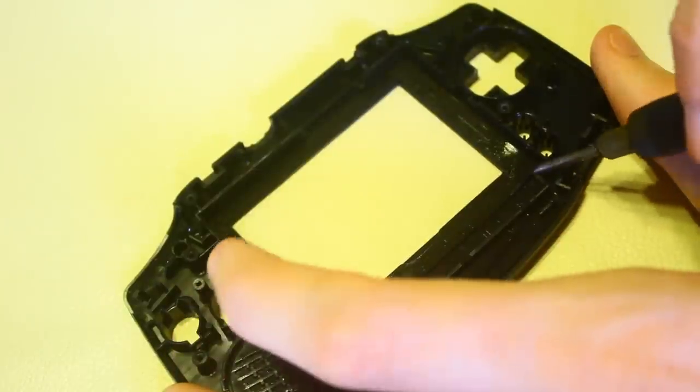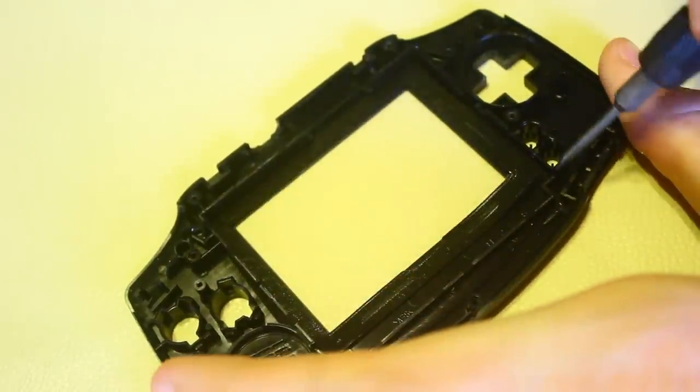Once the screen is taken away, there is a black tape surrounding the window that the screen was on. Remove this tape.